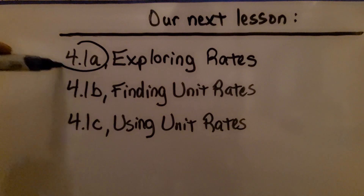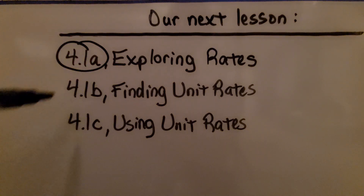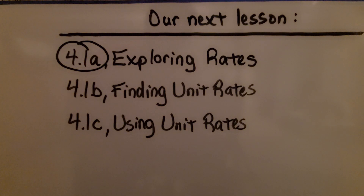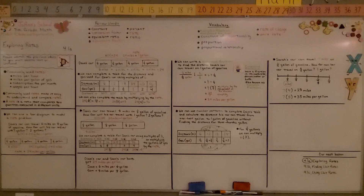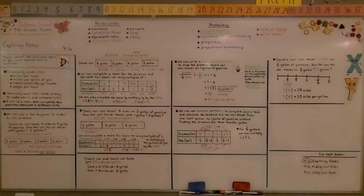That's it for 4.1a. We're going to move on to 4.1b: Finding Unit Rates. Maybe you remember back in sixth grade, module six, when we were learning about rates, ratios, and unit rates — we're going to talk about them some more. Have a really good day and join me for the next part of the lesson.